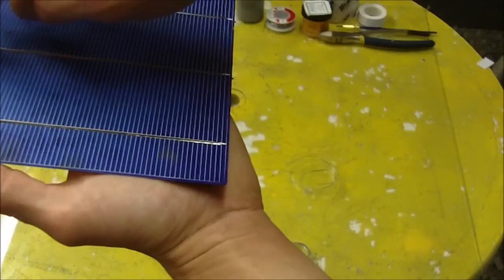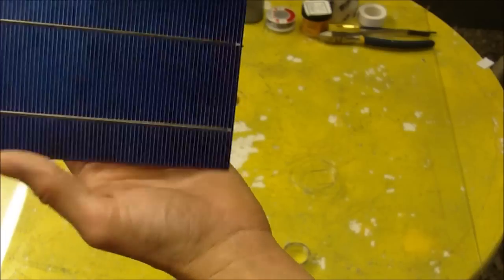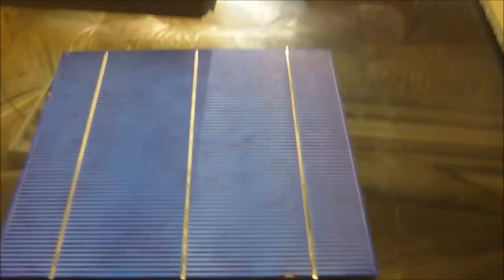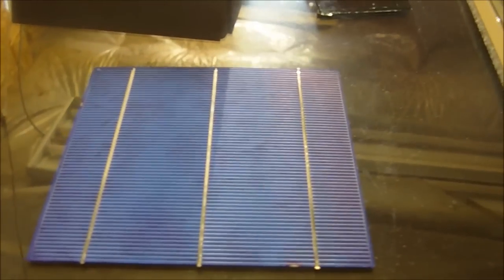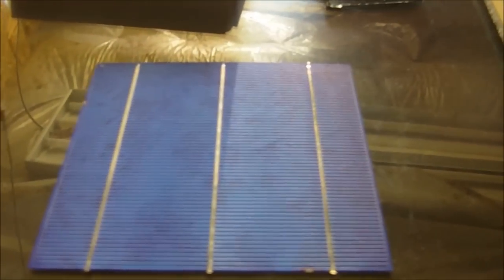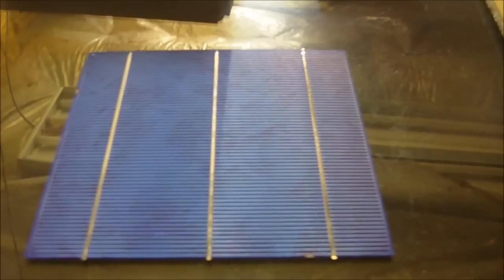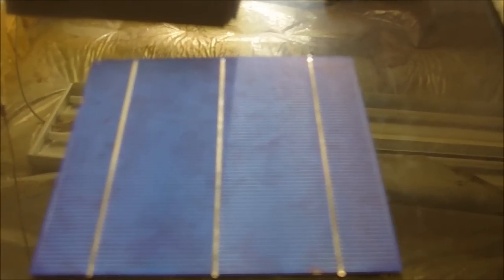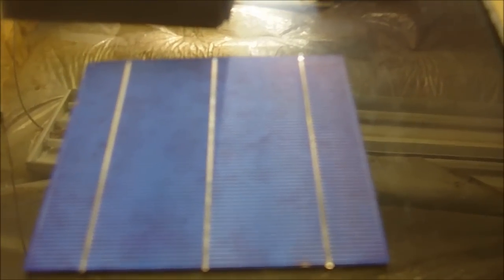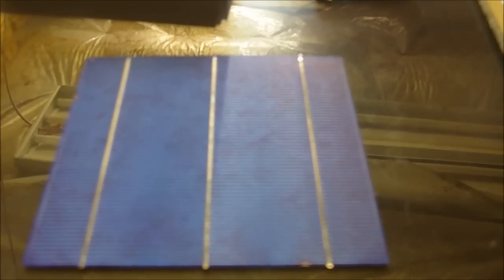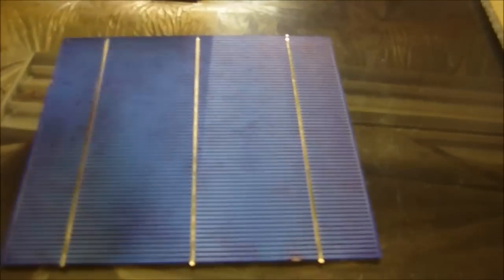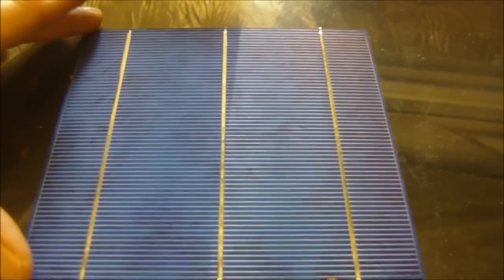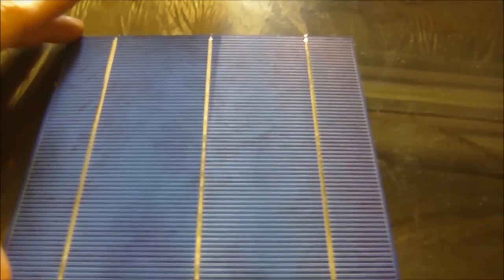When you're looking to buy solar cells off the internet, there are a few different types of cells and different sizes. The cells come, material-wise, in monocrystalline, polycrystalline, multi-crystalline (they're the same), and amorphous silicon. This one here is a multi-crystalline cell, also called a polycrystalline.